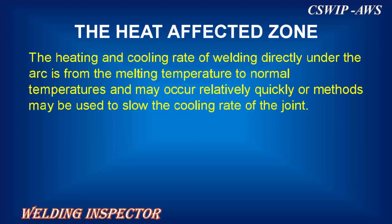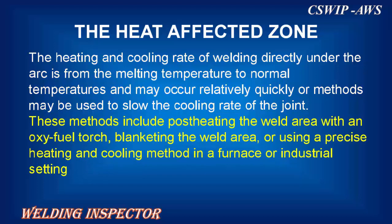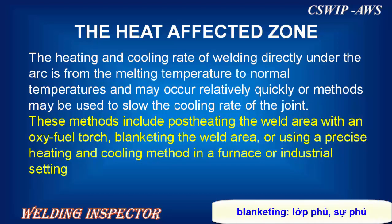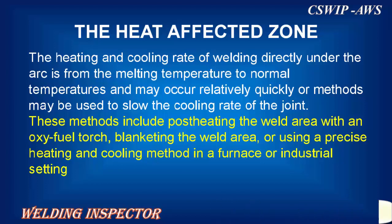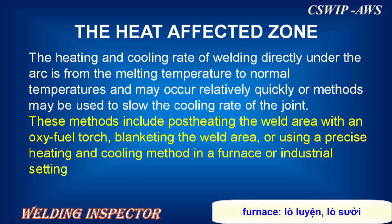The heating and cooling rate of welding directly under the arc is from the melting temperature to normal temperatures and may occur relatively quickly, or methods may be used to slow the cooling rate of the joint. These methods include post-heating the weld area with an oxy-fuel torch, blanketing the weld area, or using a precise heating and cooling method in a furnace or industrial setting.